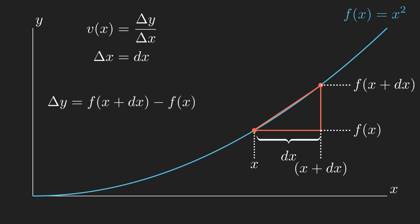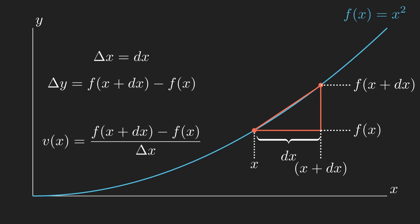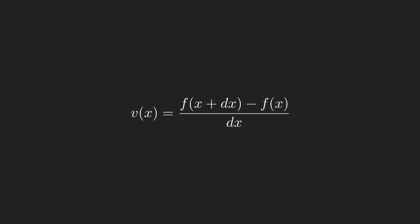Now let's put this back into our equation for the velocity and start simplifying. As f of x equals x squared, we replace f of x by squaring the value we supply it, multiply out our bracket, subtract like terms, and divide through by dx. This leaves us with v of x equals 2x plus dx.